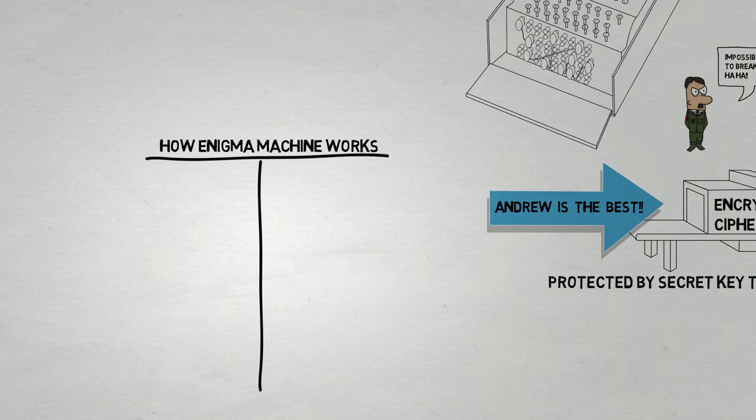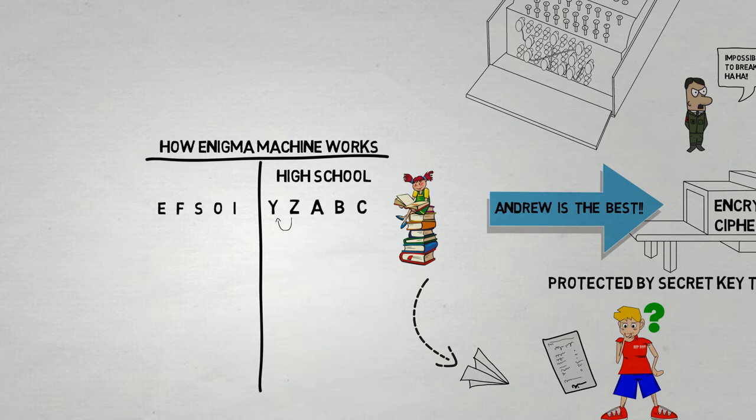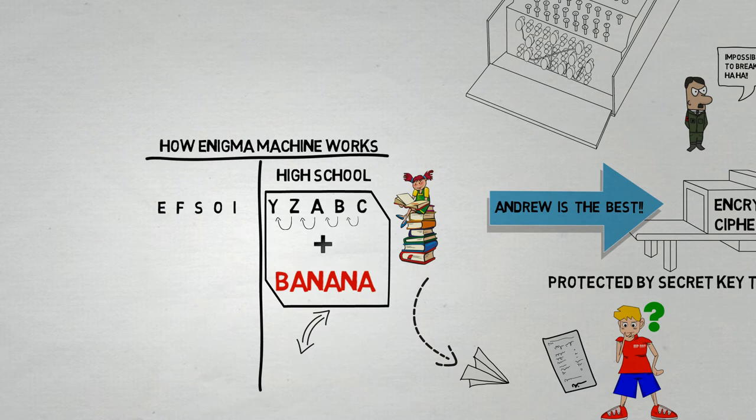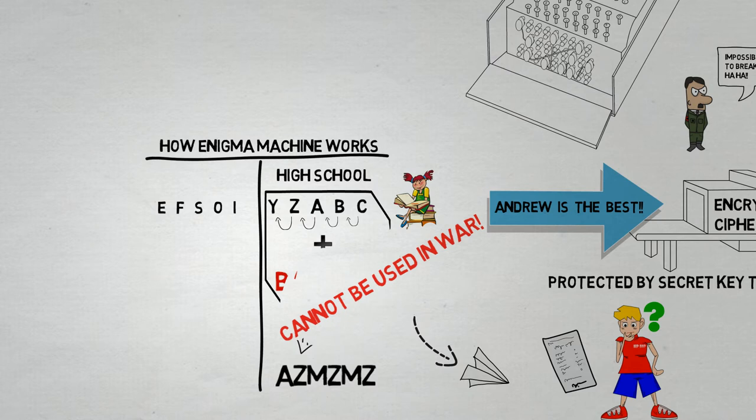Now I shall let you in on the secret of how the Enigma machine works. What the Enigma machine does is it substitutes each individual letter with another letter. Something like what you used to do in high school where you send a coded message to your classmate. You might have replaced each alphabet with its previous alphabet. For instance, you might have spelled banana as A-Z-M-Z-M-Z.